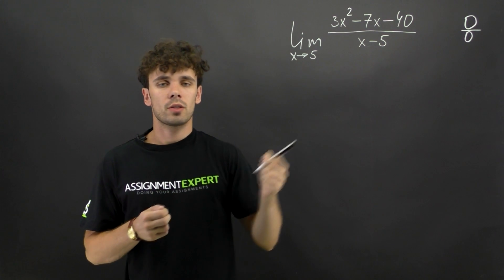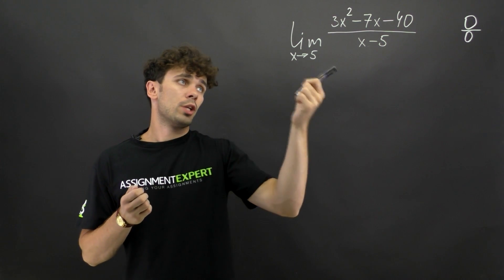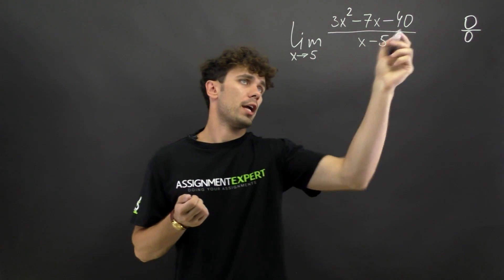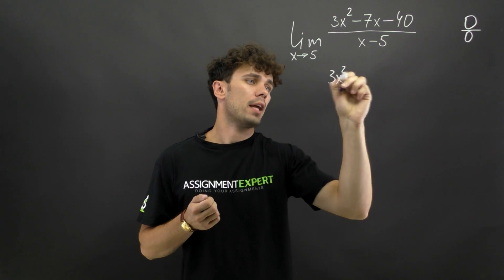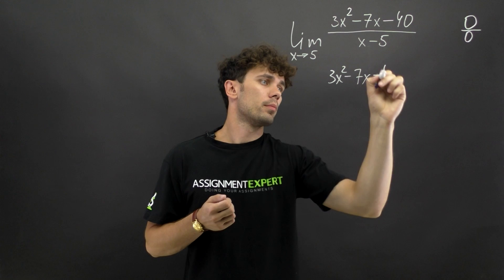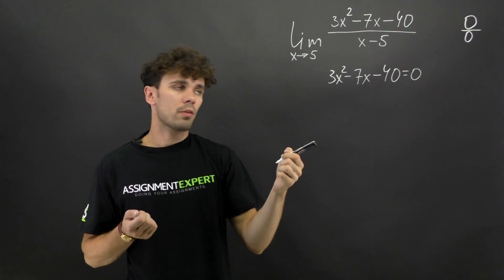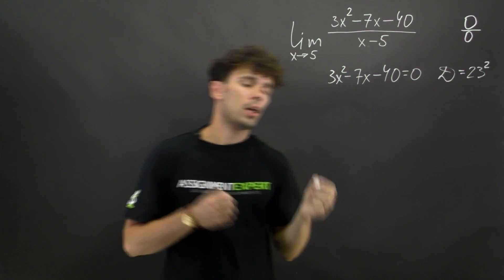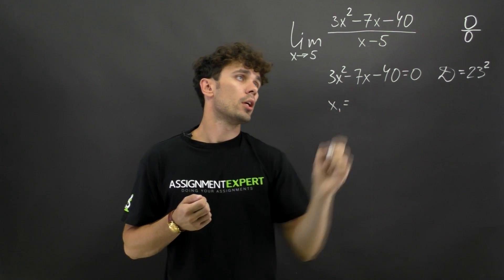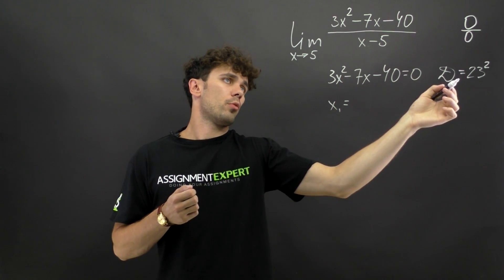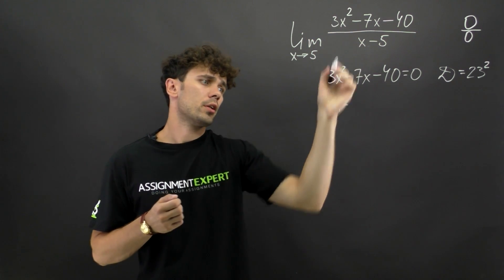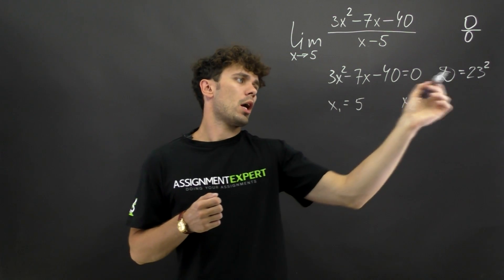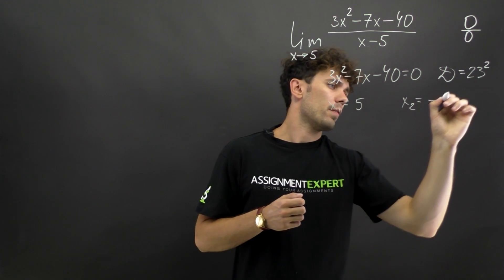This is an indeterminate form, so we need another way of answering — we need to factor the function under the limit sign. For that we need to solve the quadratic equation 3x squared minus 7x minus 40 equals 0. The discriminant of this equation equals 23 squared. Therefore the roots are x₁ equals (7 plus 23) over 6, giving us 5, and x₂ equals (7 minus 23) over 6, giving us negative 8 thirds.